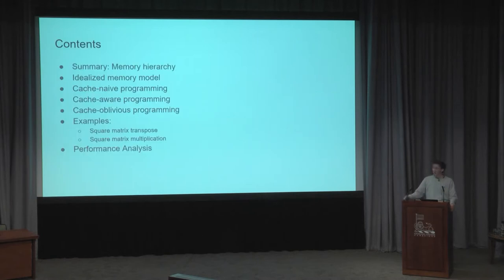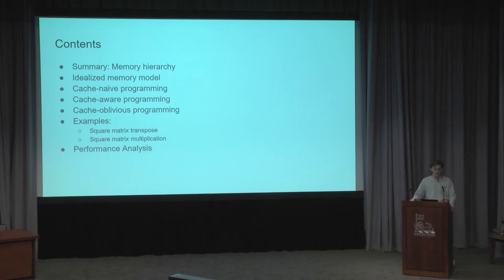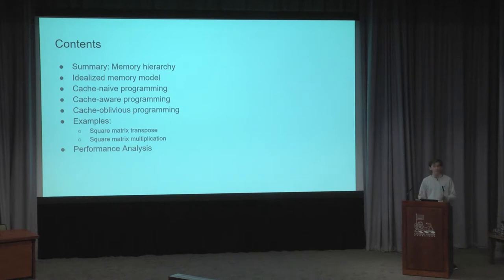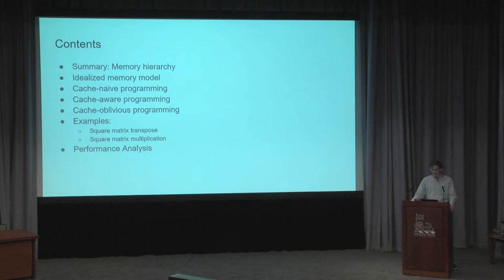I'll summarize a bit of the memory hierarchy that you may be familiar with from your computer architecture course, while also talking about the idealized memory model we're going to be using to analyze these cache algorithms. We'll talk about cache naive programming — programming without any thinking about the cache — cache aware programming where we do know parameters of the cache, and then finally move on to cache oblivious algorithms. I'll demonstrate the principles by way of example on square matrix transpose and multiplication.